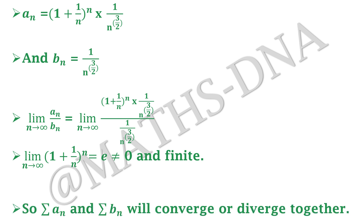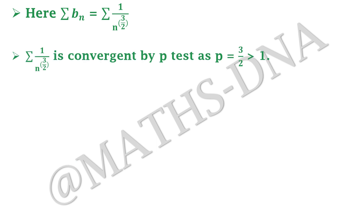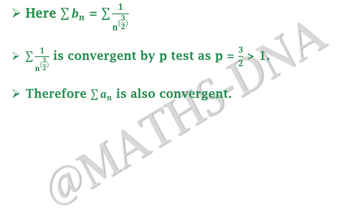So again summation aₙ and summation bₙ converge or diverge together. Here summation bₙ = Σ 1/n^(3/2), which is convergent by the p-test because p = 3/2 > 1. Therefore our summation aₙ also converges, and hence option (b) is correct.